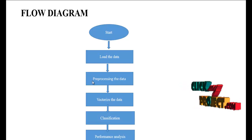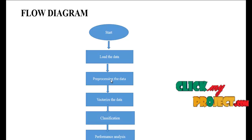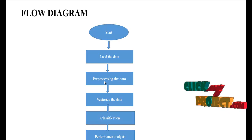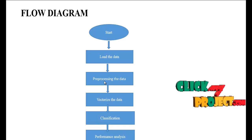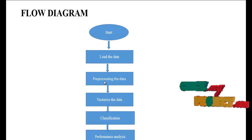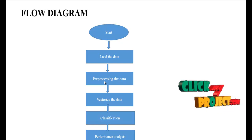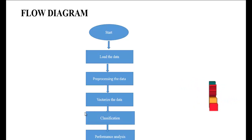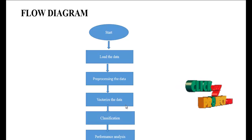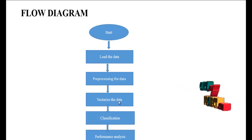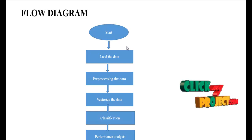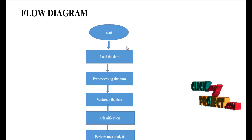After that, we implement the preprocessing step. In this step, we handle missing values, remove punctuations, and remove stop words such as 'a', 'is', and 'the'. After that, we vectorize the data using the Count Vectorization technique, which converts the number of tokens into vectors.